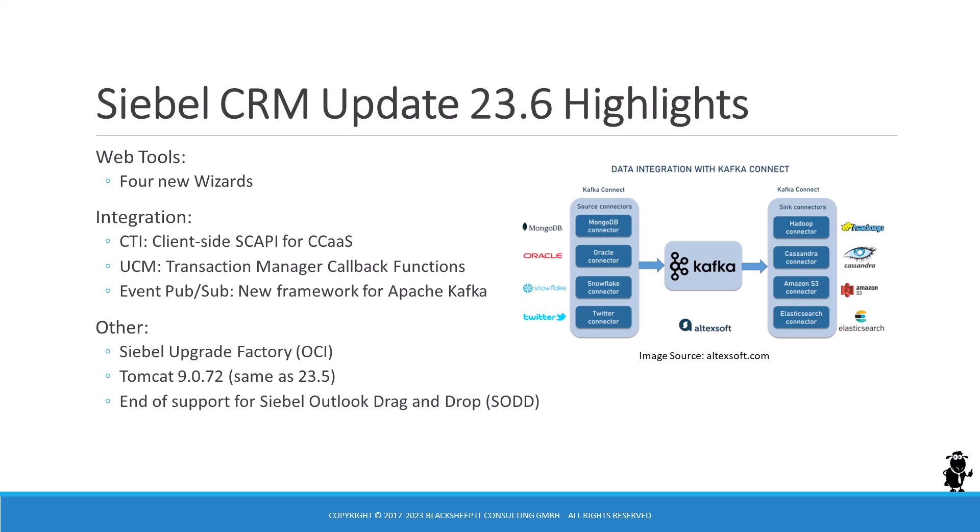The sixth update package for Siebel 23 brings a substantial number of new features and enhancements in various areas. WebTools gains four new object wizards. CTI users will love the new client-side SCAPI for CCaaS. In Universal Customer Master (UCM), developers can now use callback functions for Transaction Manager. The long-awaited event publication and subscription with Apache Kafka has arrived. On Oracle Cloud Infrastructure (OCI), Siebel Upgrade Factory is now publicly available. The Tomcat version for Siebel 23.6 is 9.0.72, and we bid farewell to SODD — Siebel Outlook Drag and Drop. That's a lot of new information to discover, so let's dig in.